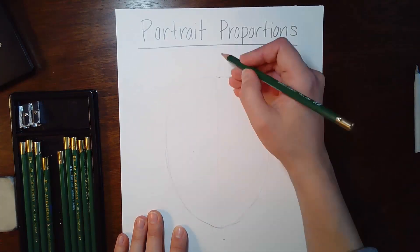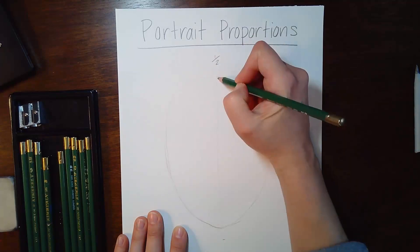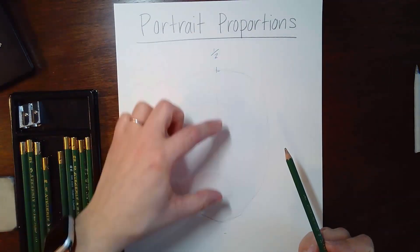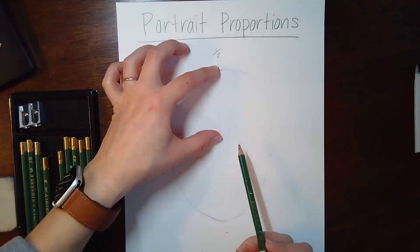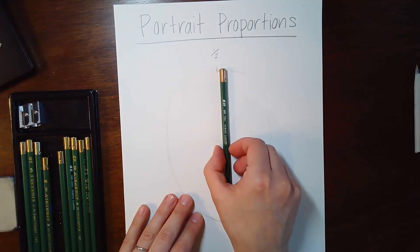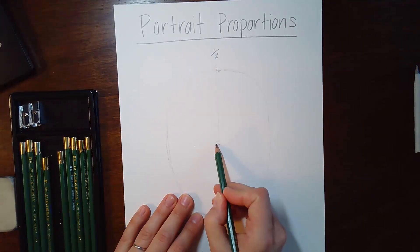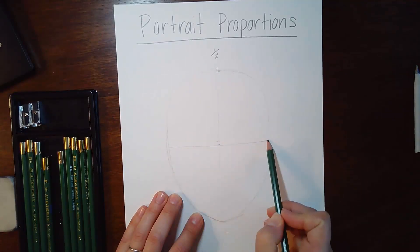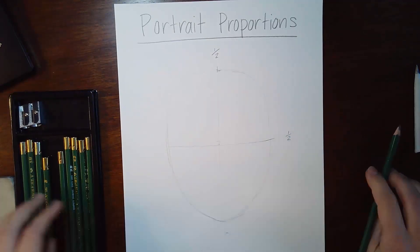And then so this was the halfway point right here. Now we're going to find the other halfway point, trying to equally divide these sections. And I like to put a little mark here, and then you can do comparative measurement with your pencil. So that needs to go down just a little bit. So again, right here, that is also halfway.